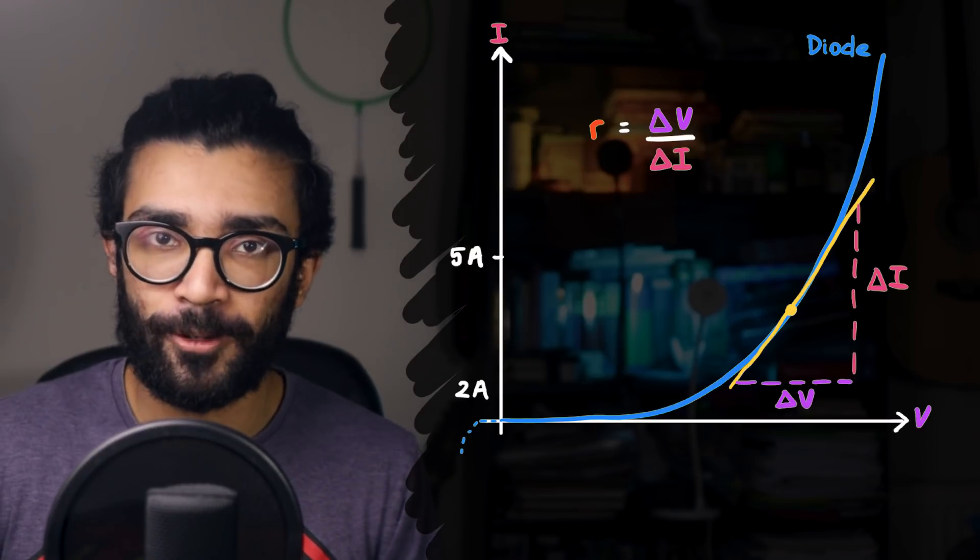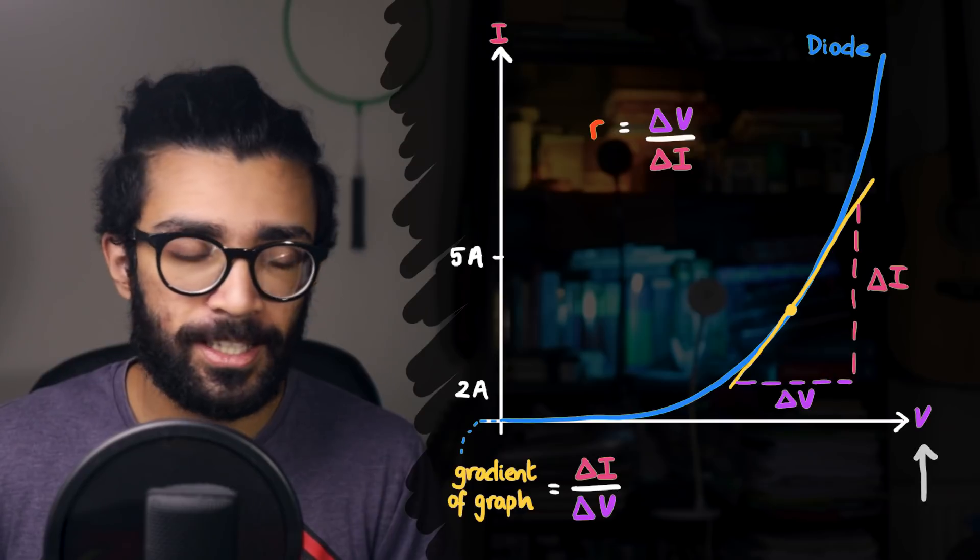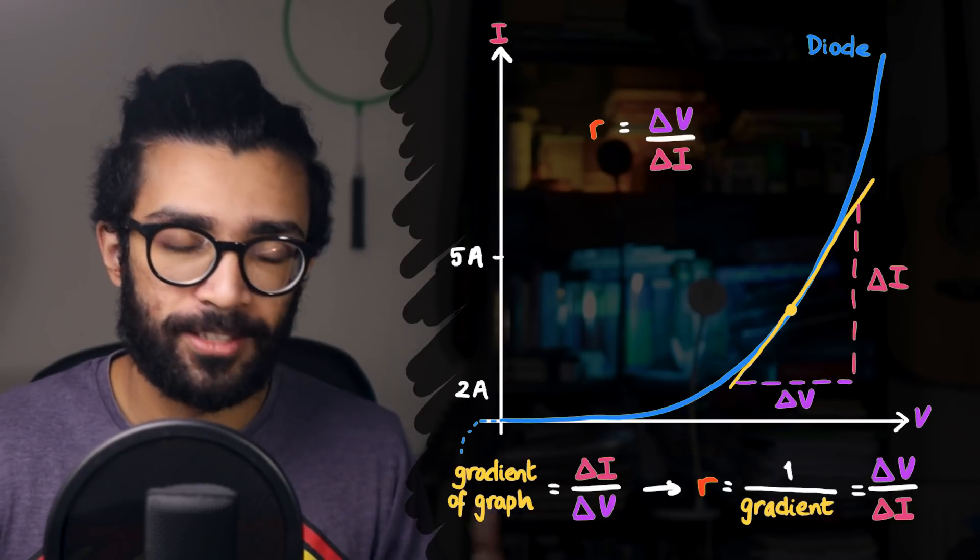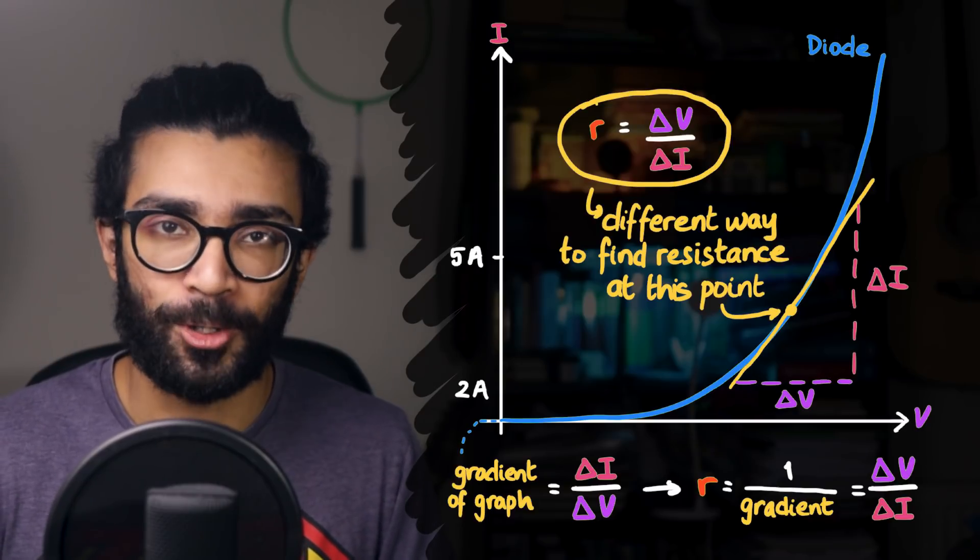Another way to measure the resistance of a non-ohmic conductor is to find the gradient or slope delta V divided by delta I. Now, technically, on this graph, we've plotted I against V, so the gradient of this graph is delta I divided by delta V, and what we're really looking for is one divided by the gradient. But the point still stands. This is a different way to find out the component's resistance.